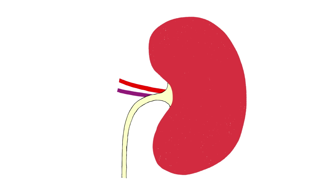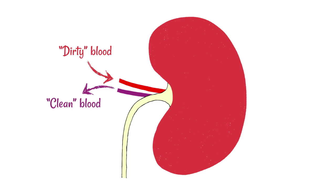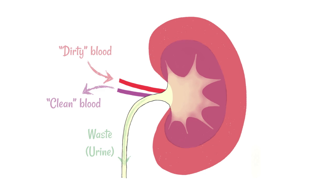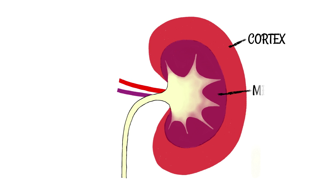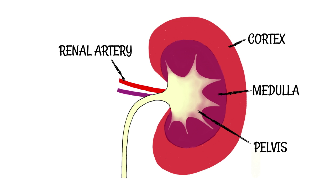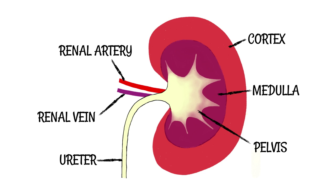The job of the kidneys is to filter the blood. Basically, we get dirty blood entering and clean blood leaving, and all of the waste products taken from that dirty blood exit as urine. If we look at the cross-section of the kidney, the outermost part is known as the cortex, the next part is the medulla, next is the pelvis, and the artery that supplies it is known as the renal artery. The blood vessel that leaves the kidney is known as the renal vein, and the tube which exits the kidney with all of the waste products is known as the ureter, which connects to the bladder.